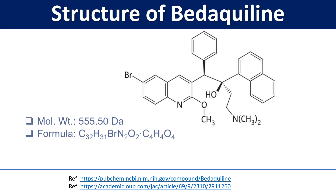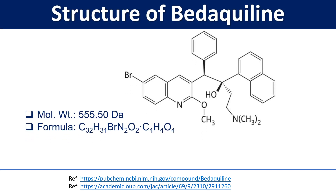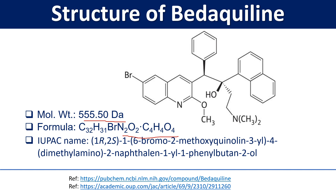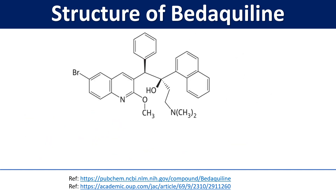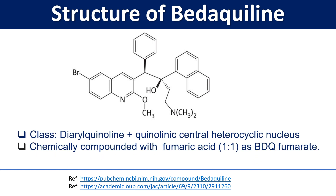Now we will cover the structure of Bedaquiline. The molecular weight is 555.50 Daltons. Here is the molecular formula and IUPAC name of Bedaquiline. Looking at the structure, Bedaquiline comes under the class of diarylquinolines, having a combined quinoline central heterocyclic nucleus. It is chemically compounded with fumaric acid in a ratio of 1:1 as Bedaquiline fumarate.